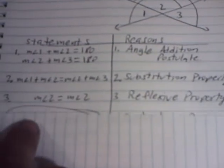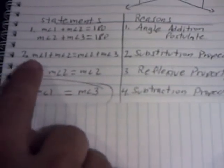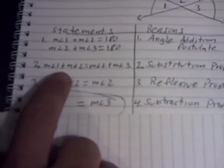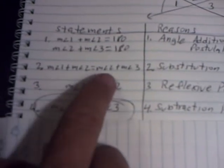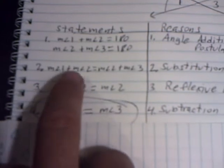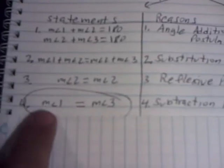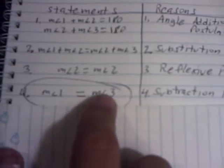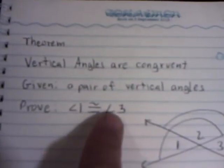Looking at the equation, the measurement of angle one and angle two together are equal to angle two and angle three. If you subtract angle two from the left side, you're left with angle one. If you subtract angle two from the right side, you're left with angle three. The reason is the subtraction property of equality. And that is what we wanted to prove — that angle one equals angle three, meaning they are congruent. That's the end of the proof.